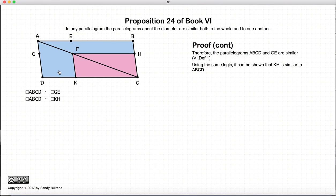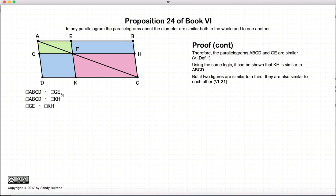Now we can use exactly the same logic to show that this large blue parallelogram is proportional to this pinkish parallelogram. And so we have that the parallelogram ABCD is similar to the parallelogram GE. And it is also similar to the parallelogram KH. If these two are similar to a single item, they are also similar to each other. So the parallelogram GE is also similar to the parallelogram KH. And thus we've shown that in any parallelogram, if we draw parallelograms about the sides of the diameter, they will be similar to the original parallelogram and any other parallelogram that is also drawn on the diameter. And that's it for this proof.